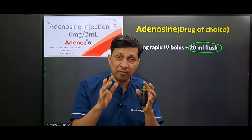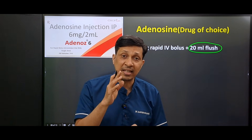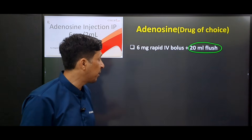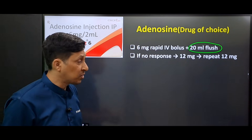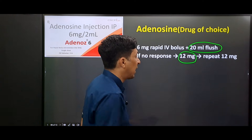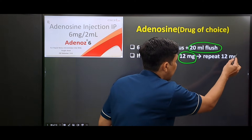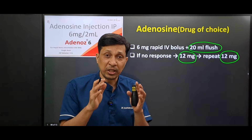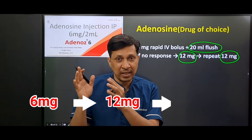This is because the half-life of the drug is very short — less than 10 seconds — so immediately you have to give a flush of 20 ml of normal saline. If there is no response, you can repeat the dose at 12 mg, and again if there is no response, you can give another dose of 12 mg. So in this way you can give three doses: 6 mg, 12 mg, and 12 mg.